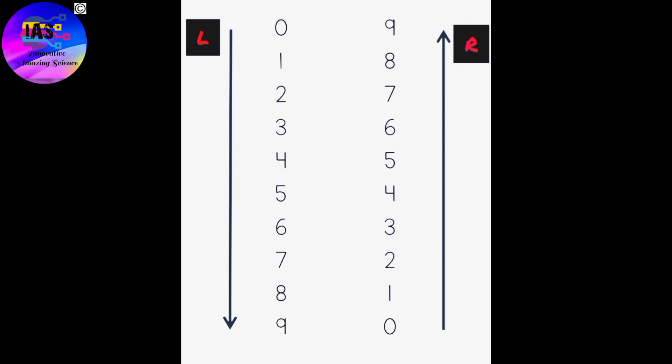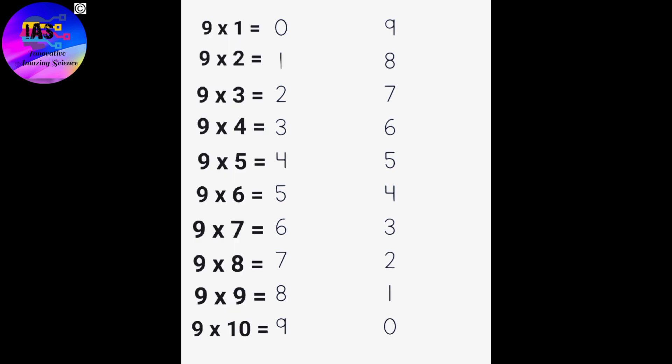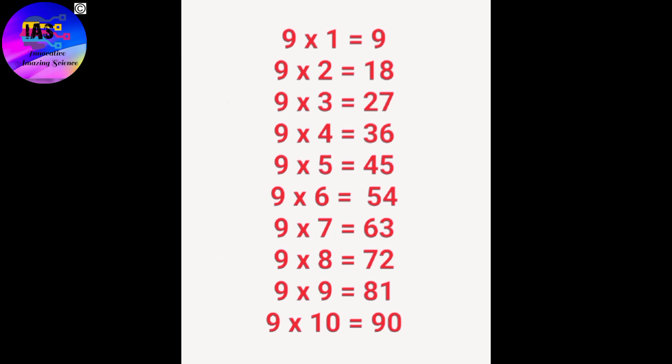Now let's move on to the second method for remembering the table of 9. You can see L and R — L stands for left, R stands for right. In the left row, arrange the numbers from 0 to 9, and in the right row arrange the numbers from 9 to 0. Then simply write out the 9 times table: 9×1=09, 9×2=18, and likewise continue through 9×10. The answers are already there — I just love this!